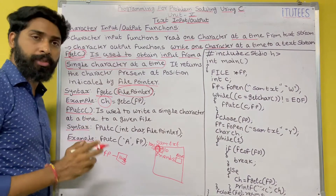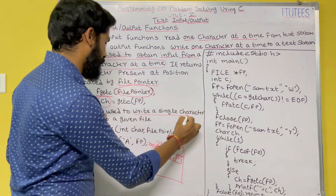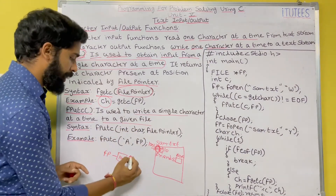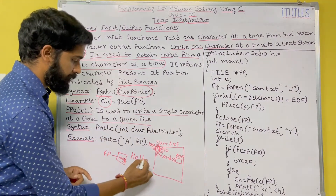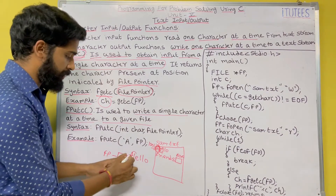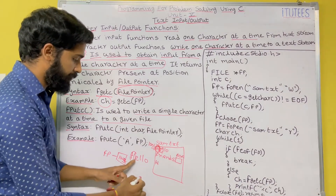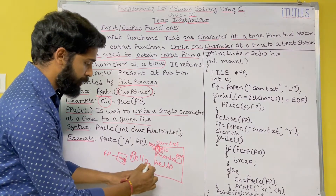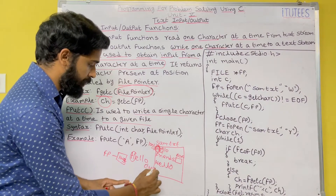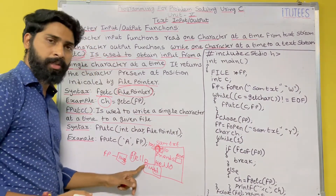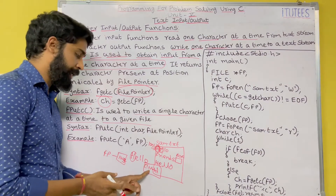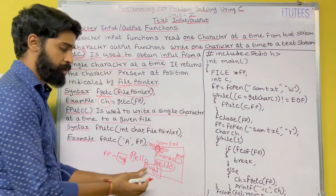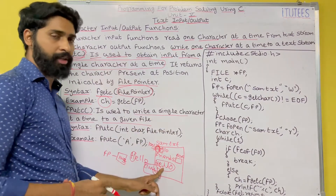Similarly, fputc is used to write a single character at a time to a given file. For example, if you give the string 'Hello', the first character is stored in the file, then the second, then the third, then 'l', then 'o'. If you give Ctrl+D, that indicates end of the file. So the string 'hello' is stored in sam.txt. We discussed this with an example.